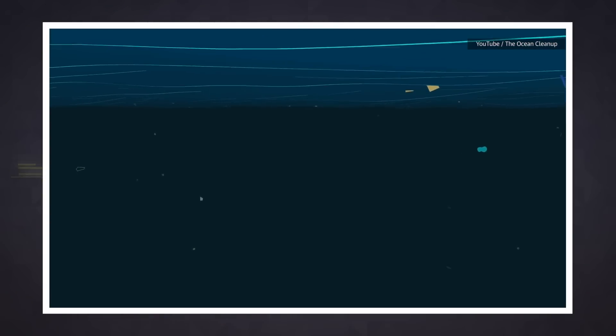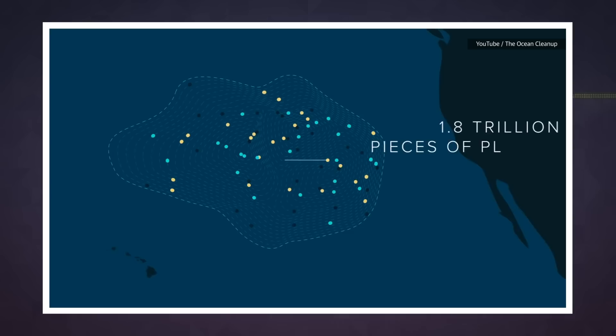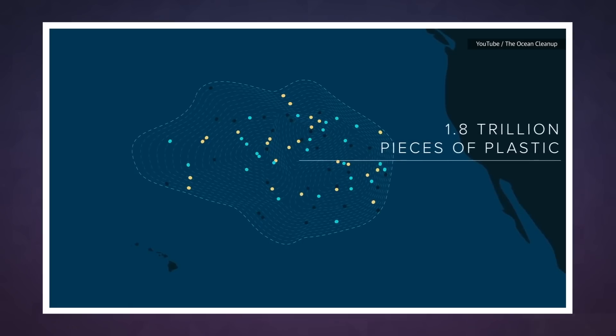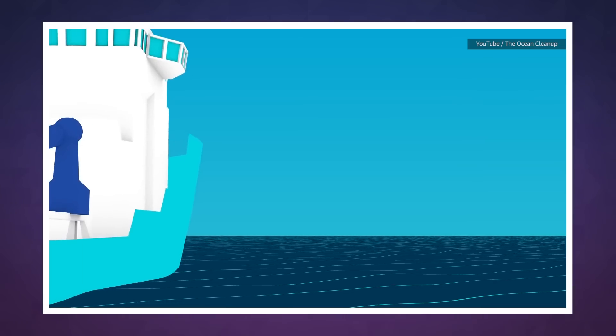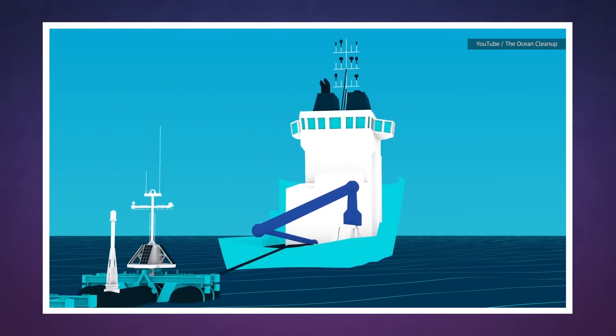The Ocean Cleanup Project has an ambitious plan to remove 88,000 tons of plastic from the Great Pacific garbage patch by using a pool noodle-like boom called System 001.